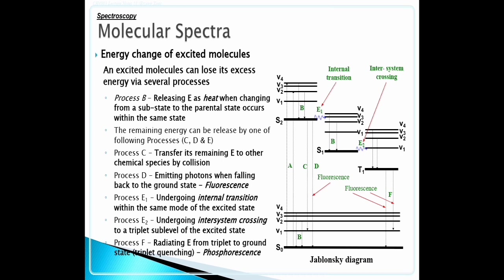Process E1: Undergoing internal transition within the same mode of excited state. Process E2: Undergoing inter-system crossing to a triplet sub-level of excited state. Process F: Radiating energy from triplet to ground state, triplet quenching, phosphorescence.